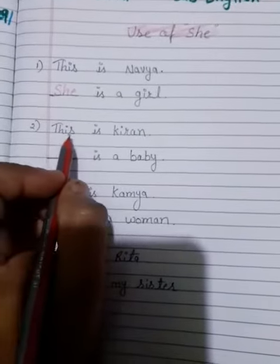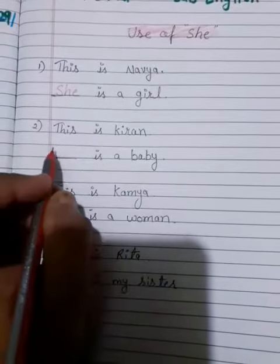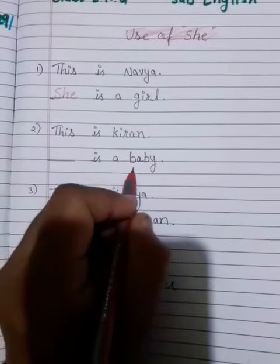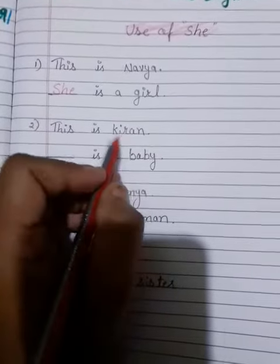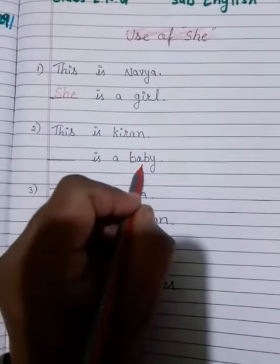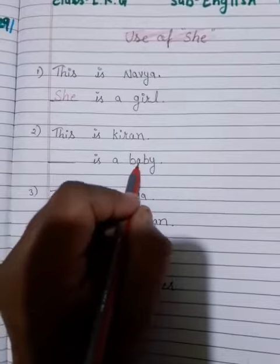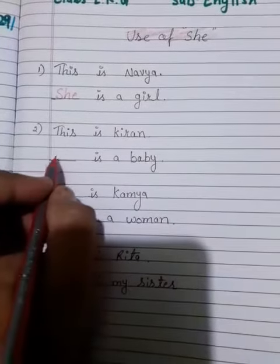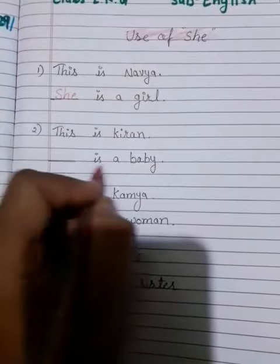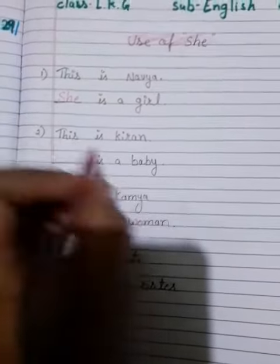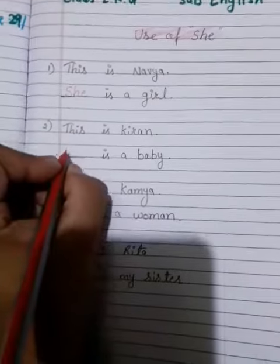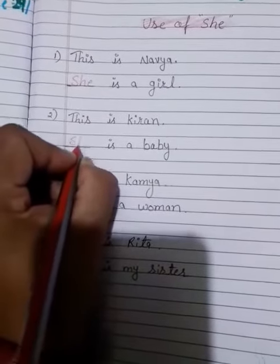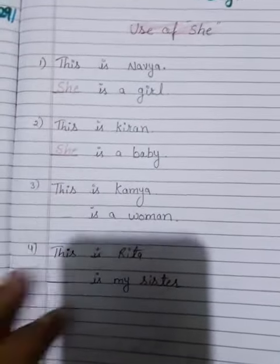This is Kiran. Das is a baby. Ab Kiran aur baby word female ke liye use kiye gaye hain. Isliye yahan kya hoga? She. She is a baby. S-H-E, she.